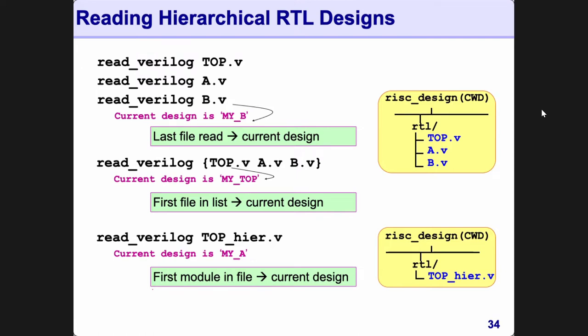Normally this doesn't happen for RTL, only for netlists. But you may read in one Verilog file that contains multiple modules inside it — perfectly valid. It's bad design practice for RTL but many times used in netlists, which normally are one single file containing multiple modules. In this case the current design is the first module that DC finds in the file. Notice that in all three cases the current design can be different.